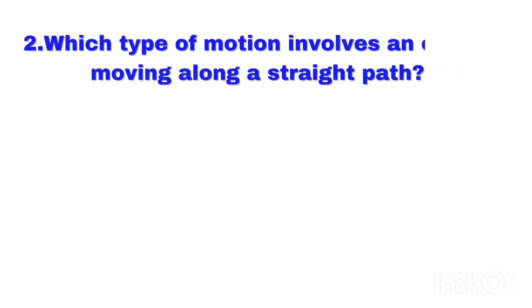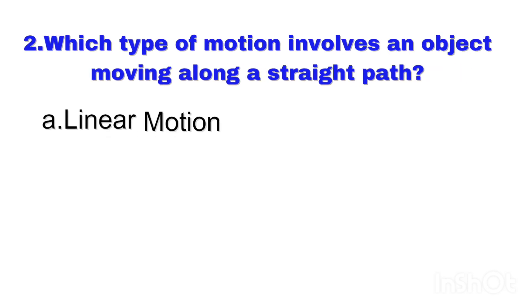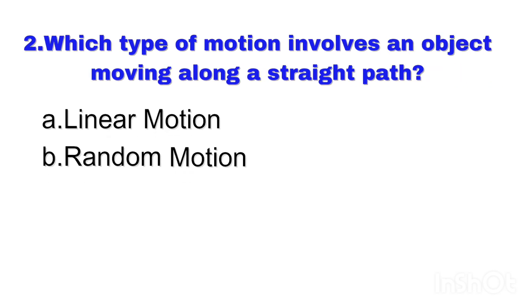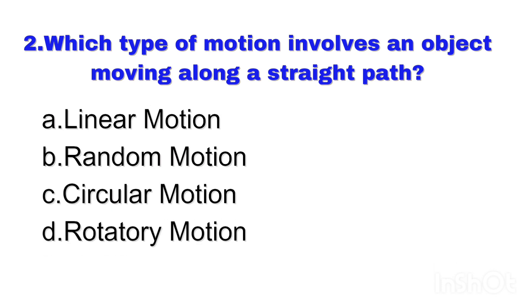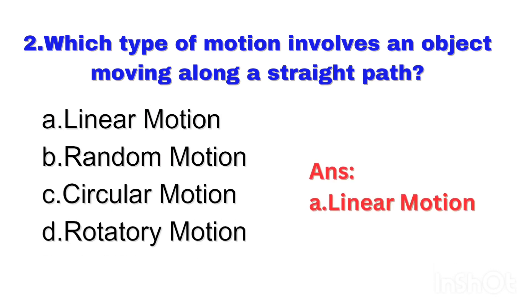Question number 2. Which type of motion involves an object moving along a straight path? Right answer: Option E — Linear motion.